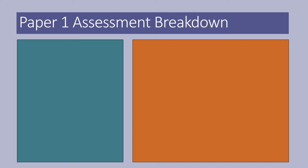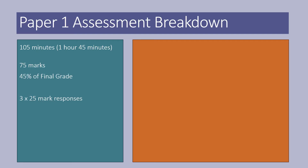Just a quick recap of the paper one assessment breakdown. Please use the chapters in the video to scroll through if you know all this. Paper one is one hour and 45 minutes, worth 75 marks, and 45% of your final grade. You respond to three by 25 mark responses. Within those questions, you have to answer three by seven case study questions, which is roughly 30% of this exam.